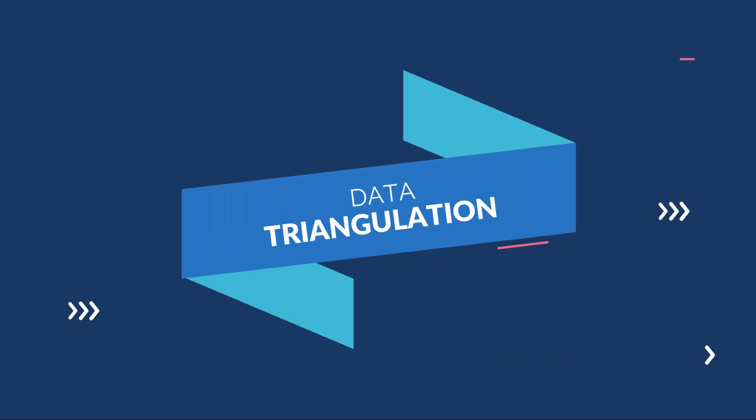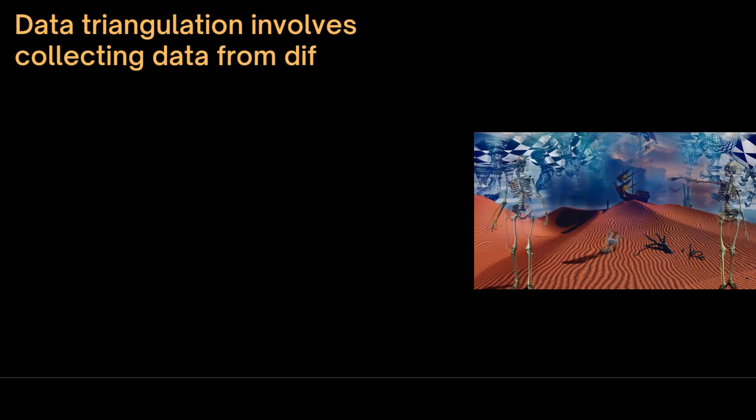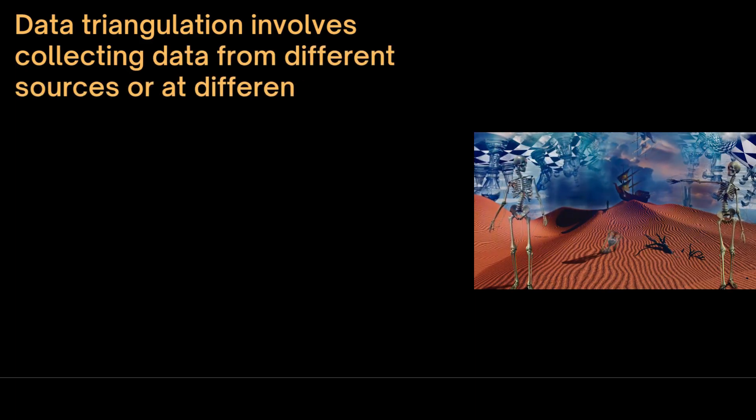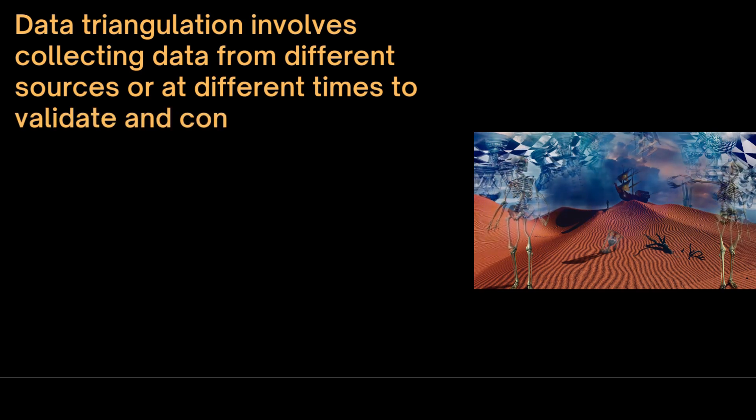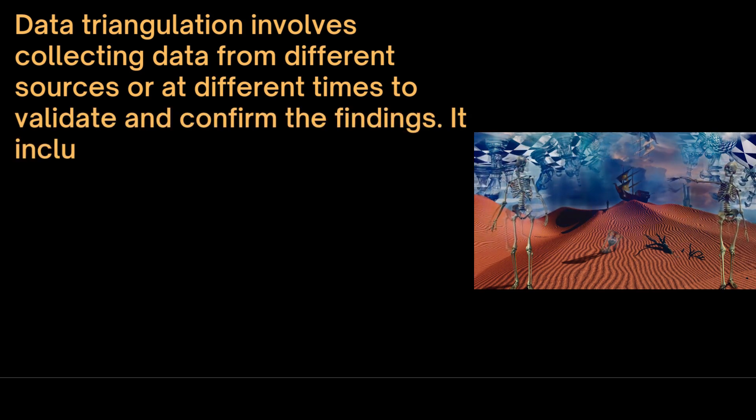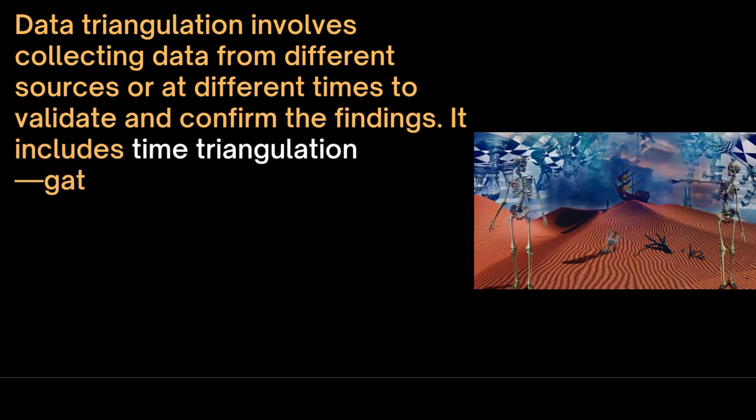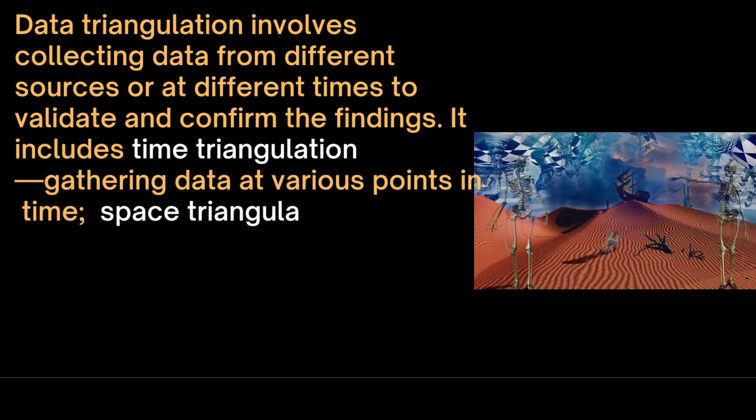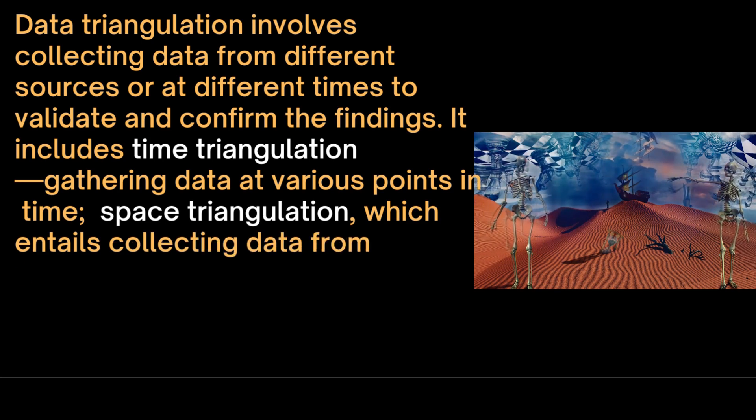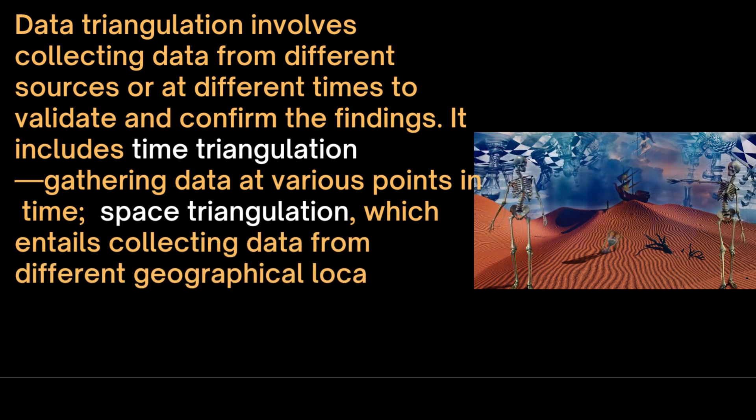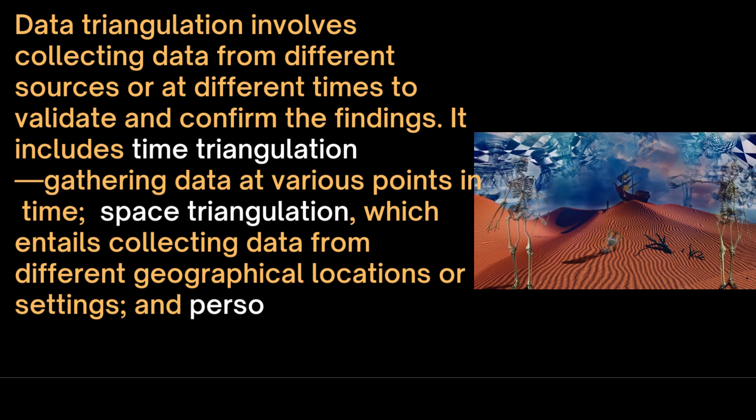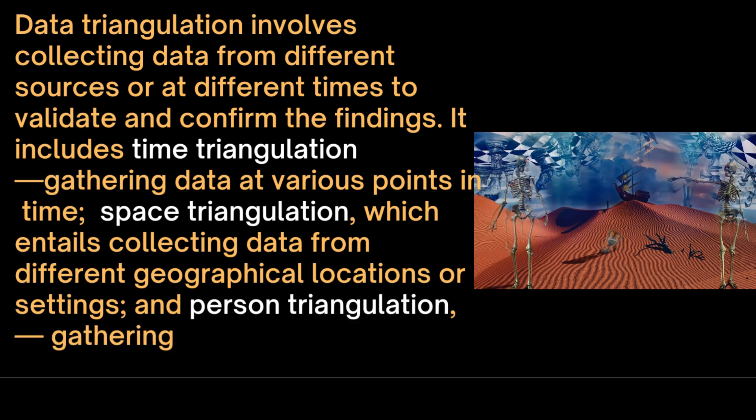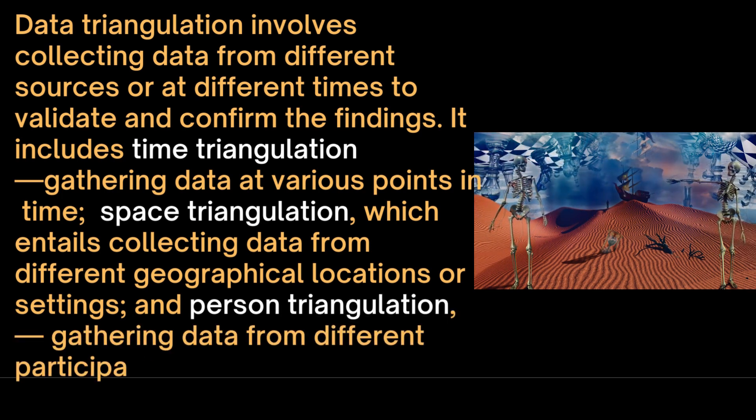Data triangulation involves collecting data from different sources or at different times to validate and confirm the findings. It includes time triangulation, which is gathering data at various points in time, space triangulation, which entails collecting data from different geographical locations or settings, and person triangulation, gathering data from different participants or groups.